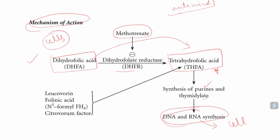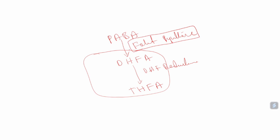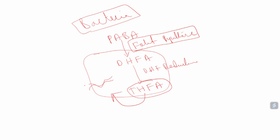I would like to relate this mechanism with antimicrobial agents — specifically sulfonamides. In a bacterial cell, bacteria synthesize folic acid from PABA. PABA is converted into dihydrofolic acid, and dihydrofolic acid converts into tetrahydrofolic acid. Two enzymes are important here: folate synthase and dihydrofolate reductase. These two reactions occur in bacteria. The tetrahydrofolate then helps in DNA synthesis, replication, and cell division.